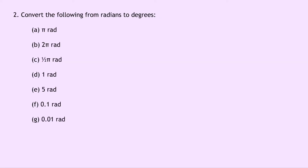Question two says to convert the following from radians to degrees. We've got seven parts A through to G — the opposite of question one. Part A: pi radians is 180 degrees. Part B: 2 pi radians is 360 degrees. Part C: pi over 2 radians is 90 degrees. Part D: 1 radian is 57.3 degrees — remember that relationship from the notes to help you convert between the two. Part E: 5 radians is 286.5 degrees. Part F: 0.1 radians is 5.73 degrees. Part G: 0.01 radians is 0.57 degrees.